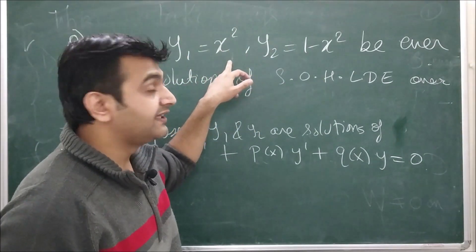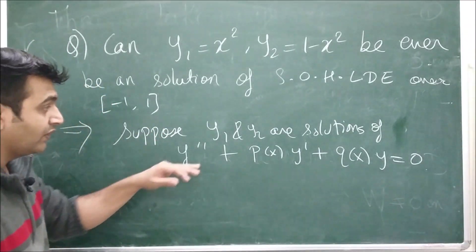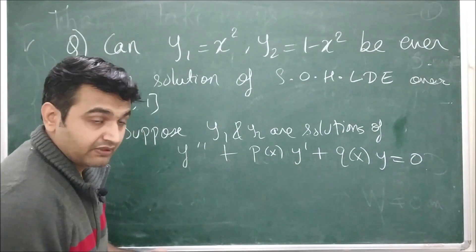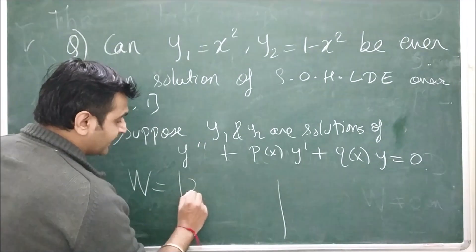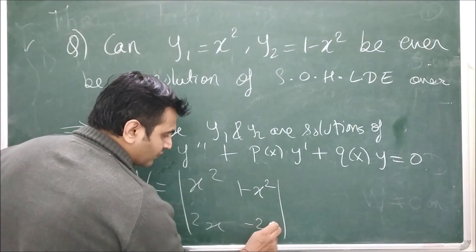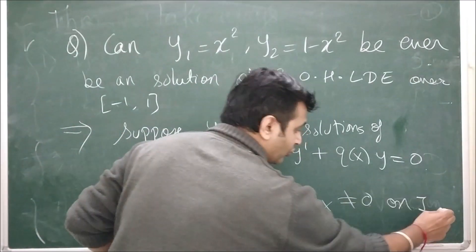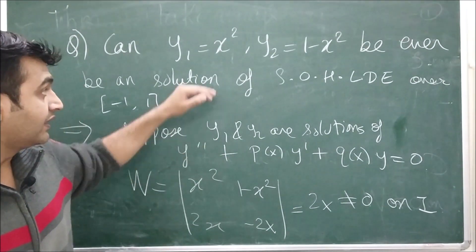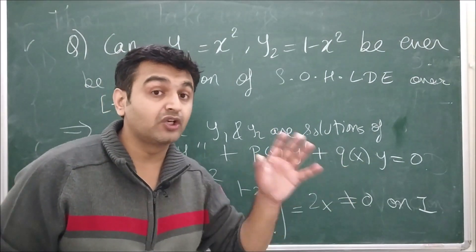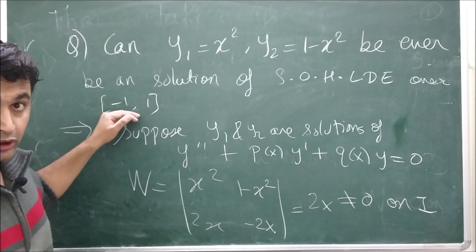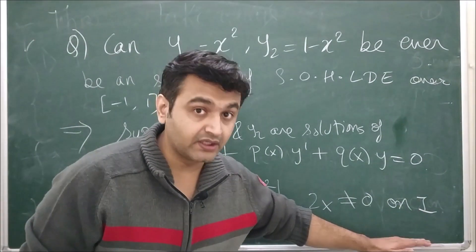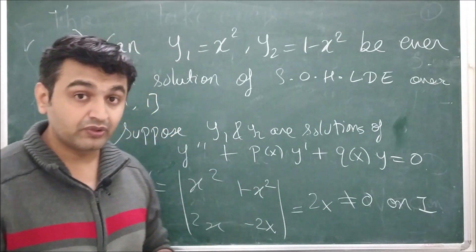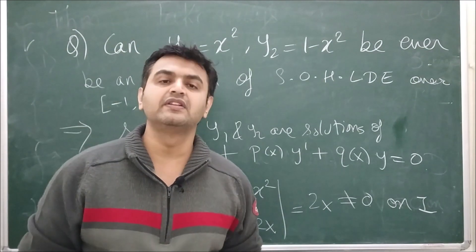First, y1 = x² and y2 = 1 − x² are linearly independent (no scalar multiple of one gives the other). By the theorem, independent solutions must have non-zero Wronskian on the whole interval. Computing: the Wronskian is det([[x², 1−x²],[2x, −2x]]) = −2x³ − 2x(1−x²) = −2x, which is zero at x = 0 ∈ (−1,1). Contradiction — so these two functions cannot both be solutions of any such equation.